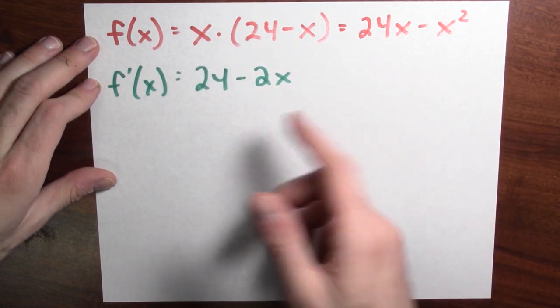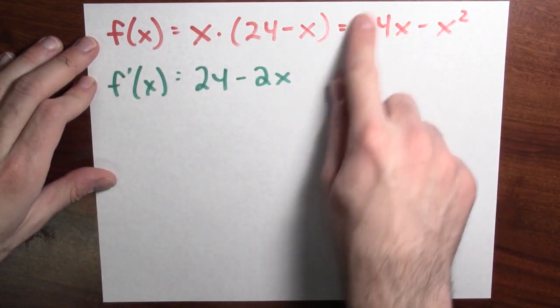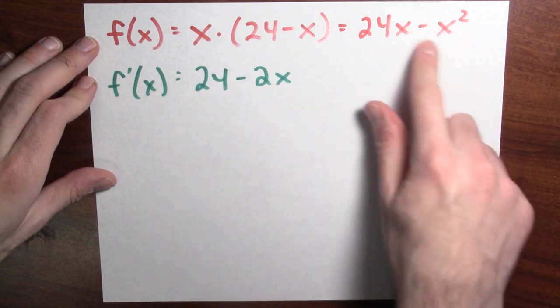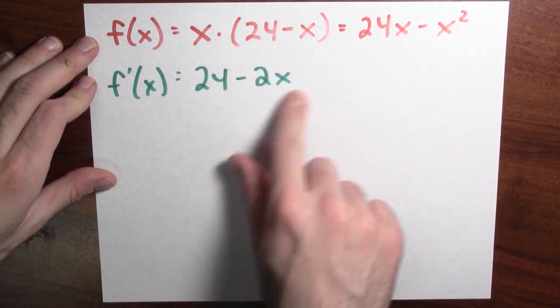And then I can easily differentiate this. The derivative of this function is, what's the derivative of 24x? It's 24. What's the derivative of minus x squared? It's minus 2x.